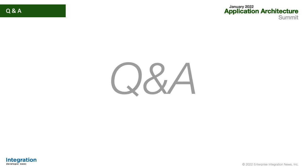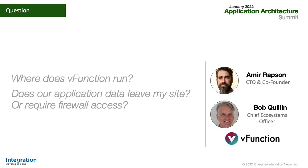A common question is: where exactly does vFunction run? Does application data leave my site or require firewall access? vFunction is designed to work either on-premise or in your own cloud tenancy. All your data and information remains in your environment — it's behind your firewall. There's no SaaS equivalent — nothing is pushed up to a SaaS environment for analysis. Everything stays within your environment and they've been through a variety of security checks with the banks and financial services organizations they work with.